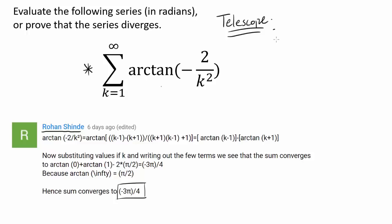So let me give you a quick example. A summation like this is going to telescope: if you have n minus (n plus 1), and you are summing it from n equals 1 to, let's say, 10.